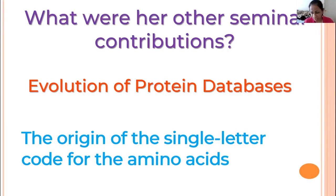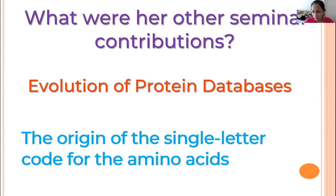Think about the 1960s — why would she come up with a single letter amino acid code? You all are in a generation where you have gigabytes of data in your phone. Back then, they were talking about kilobytes or even megabytes of data. They didn't have supercomputers, so they wanted to make sure they didn't use too much space. They actually converted sequences to single letter amino acid code. Storing information efficiently was the key reason.